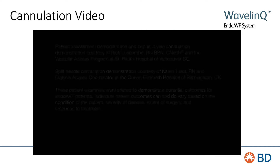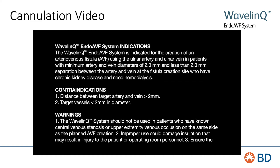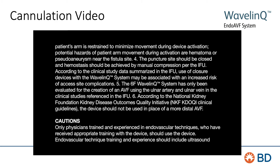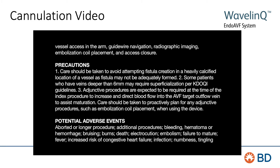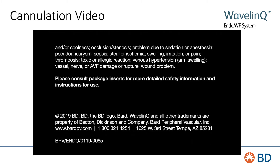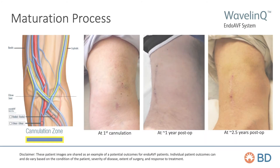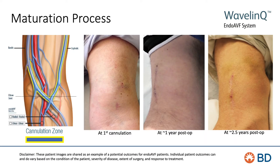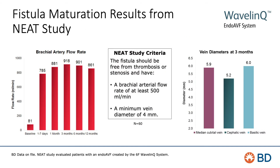These patient examples demonstrate potential outcomes for endo-AVF patients. Individual patient outcomes can and do vary based on the condition of the patient, severity of the disease, extent of surgery, and response to treatment. The illustration on the left shows potential cannulation zones of the outflow veins of the endo-AVF. The images that follow show development of an endo-AVF from first cannulation through two and a half years post-creation. The arm shows rope ladder cannulation but minimal scarring and arm disfigurement.